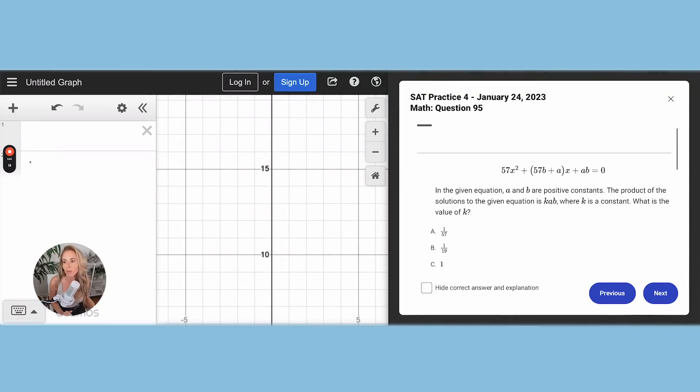Okay, so here's what we're going to do. I'm going to type the whole equation into Desmos. I'm going to add a slider for both A and B.